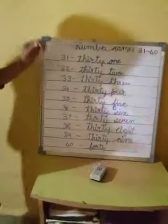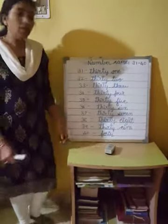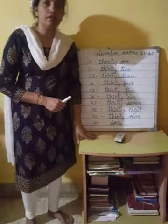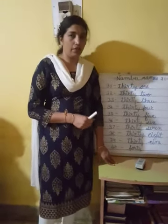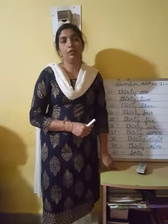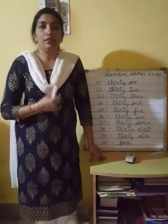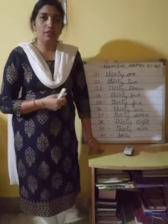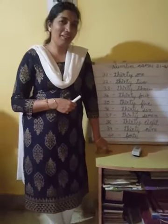So children, this is the number names of 31 to 40. Learn these number names and write them two times. Children, stay home, stay safe. Thank you. Bye.